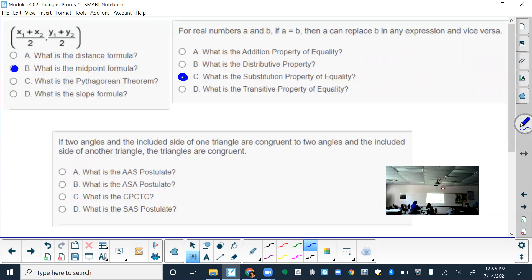On the bottom, if two angles and the included side of one triangle are congruent to two angles and the included side of another triangle, the triangles are congruent. So that's two angles and the included side. Which one would that be? ASA, right? Two angles and the included side, so included meaning that is in between them.